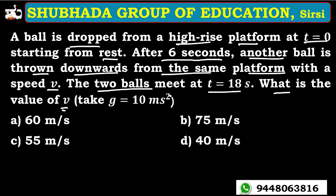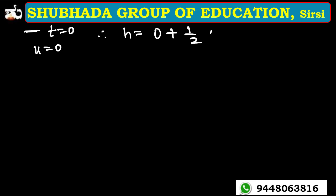This is an important type of problem. For case one, the ball is in free fall, so initial velocity is zero. Therefore, the distance covered is h equal to ut plus half g t squared. Since u equals zero, h equals half g t squared, and t is 18 seconds, so h equals half g into 18 squared.